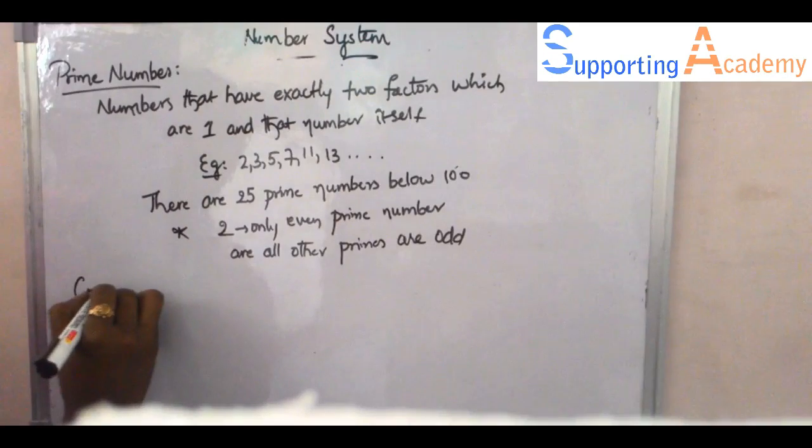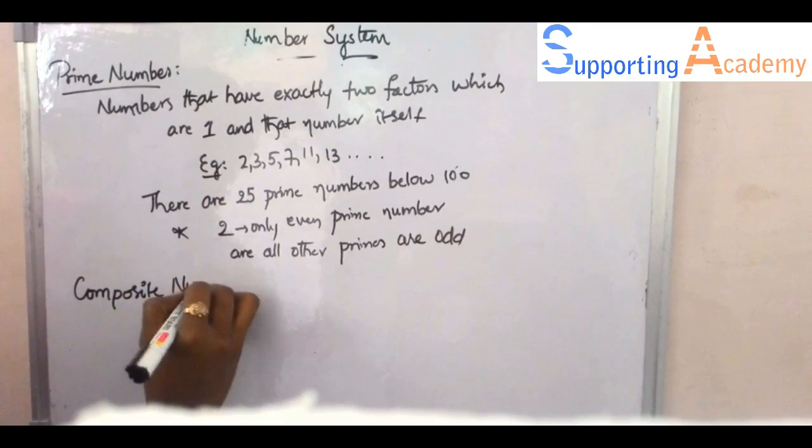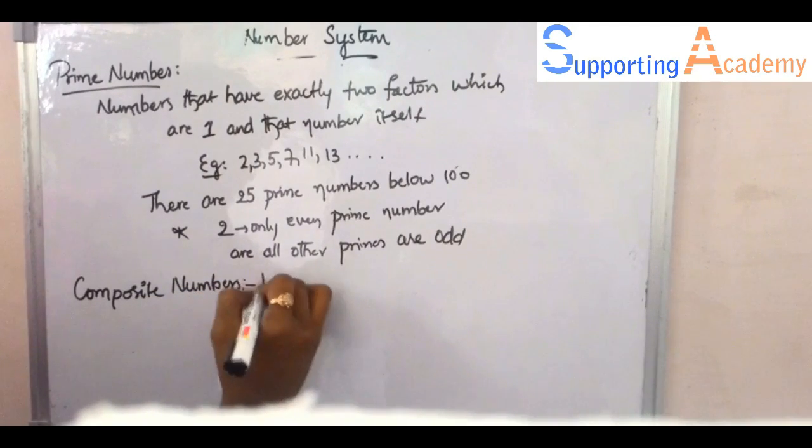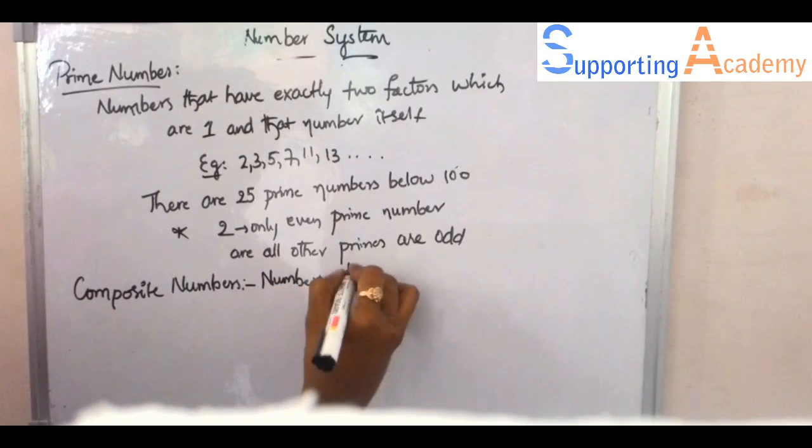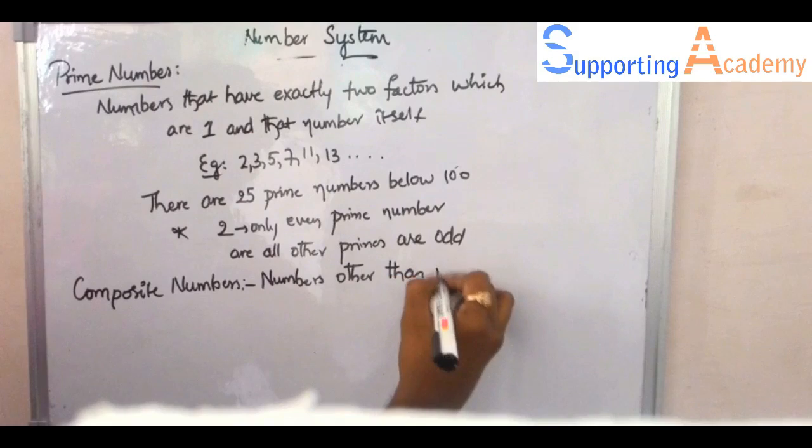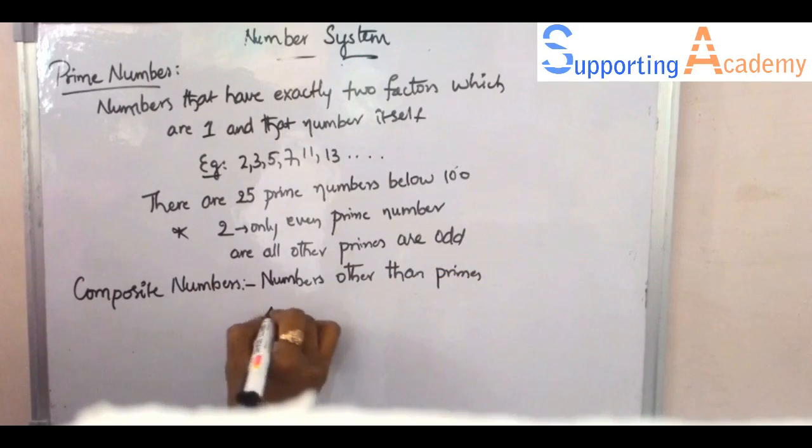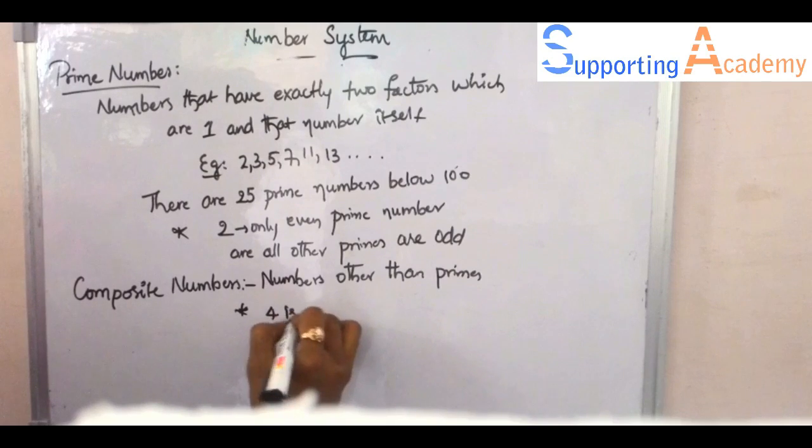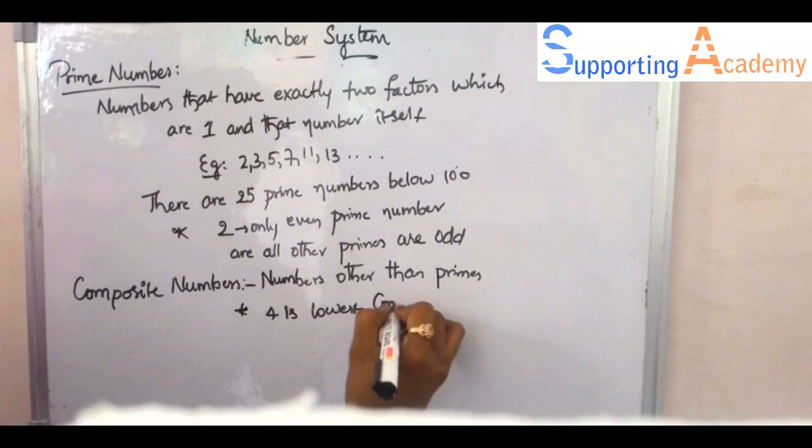And now we will discuss about composite numbers. The natural numbers which are other than prime numbers are called composite numbers. Zero is neither a prime nor a composite number. Remember that. Composite numbers, the least composite number is 4 because the below numbers are 2, 3, they are prime numbers and 4 is the only composite number lowest.